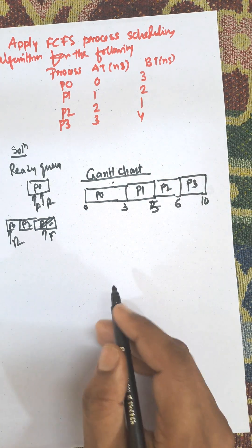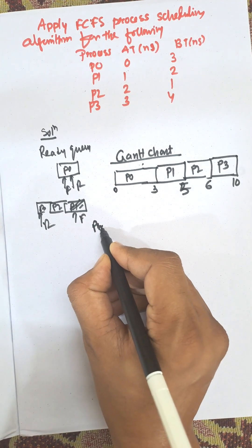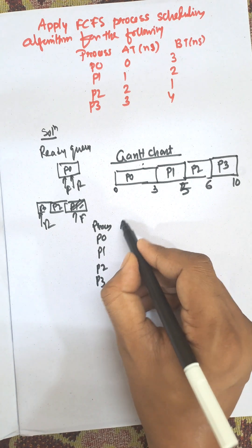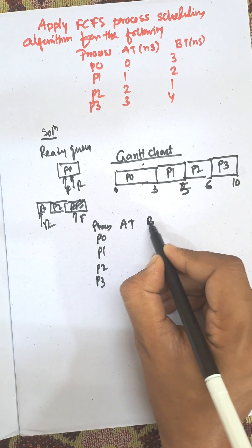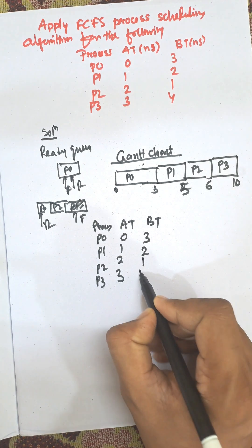Now all processes are completed. We need to construct the table again. Process: P0, P1, P2, P3. Arrival time in nanoseconds: 0, 1, 2, 3. Burst time: 3, 2, 1, 4.